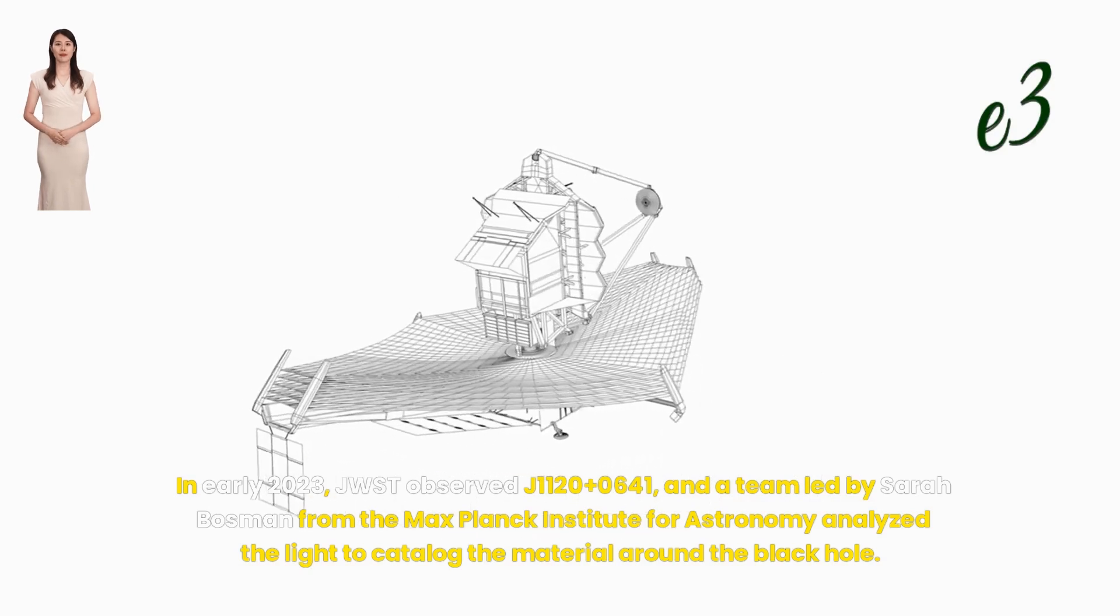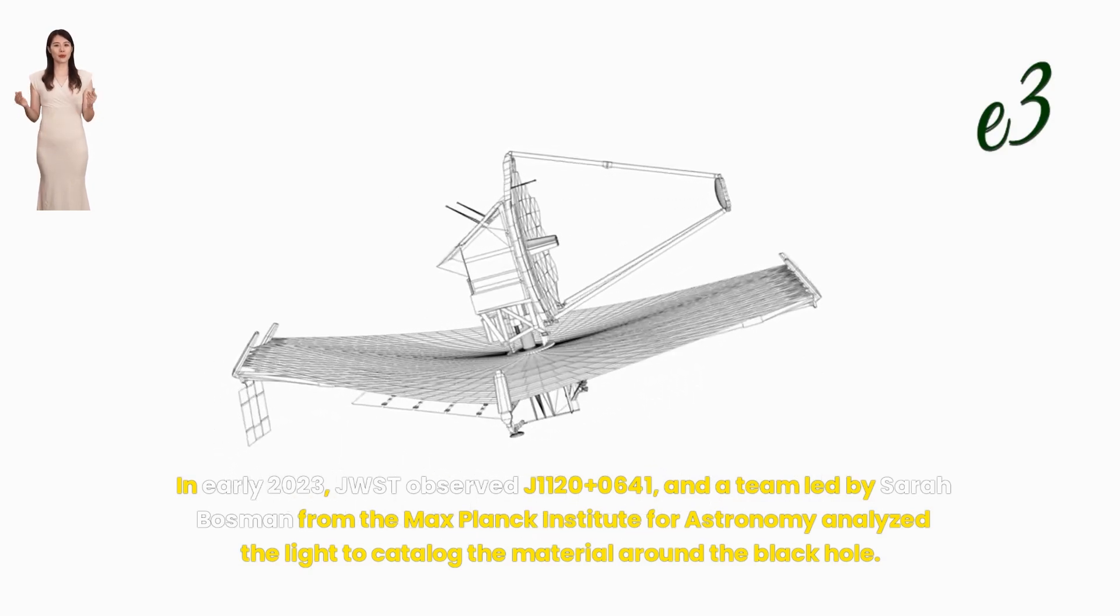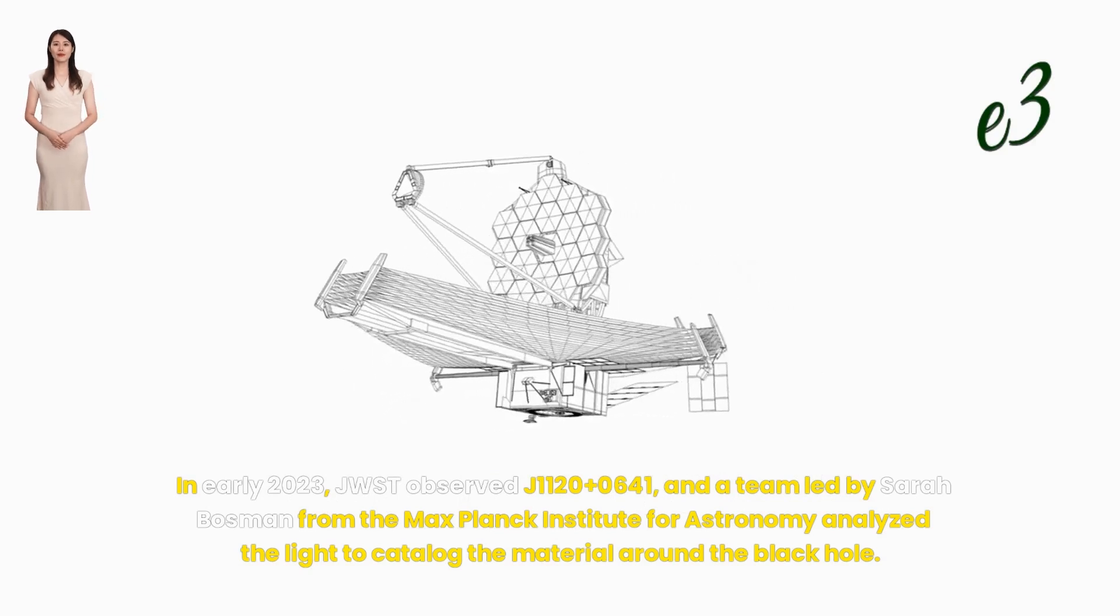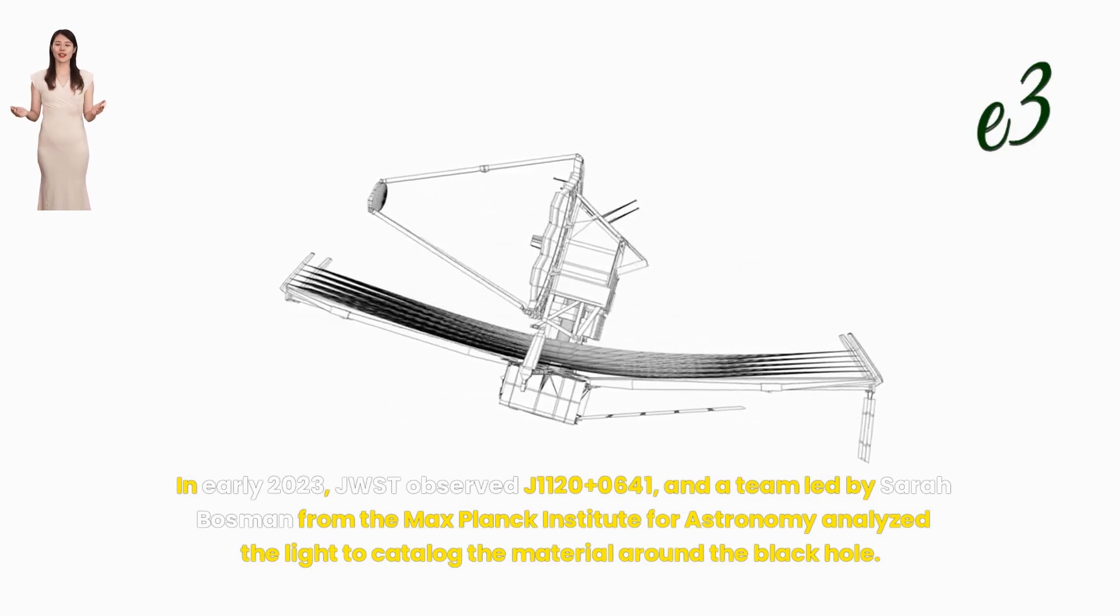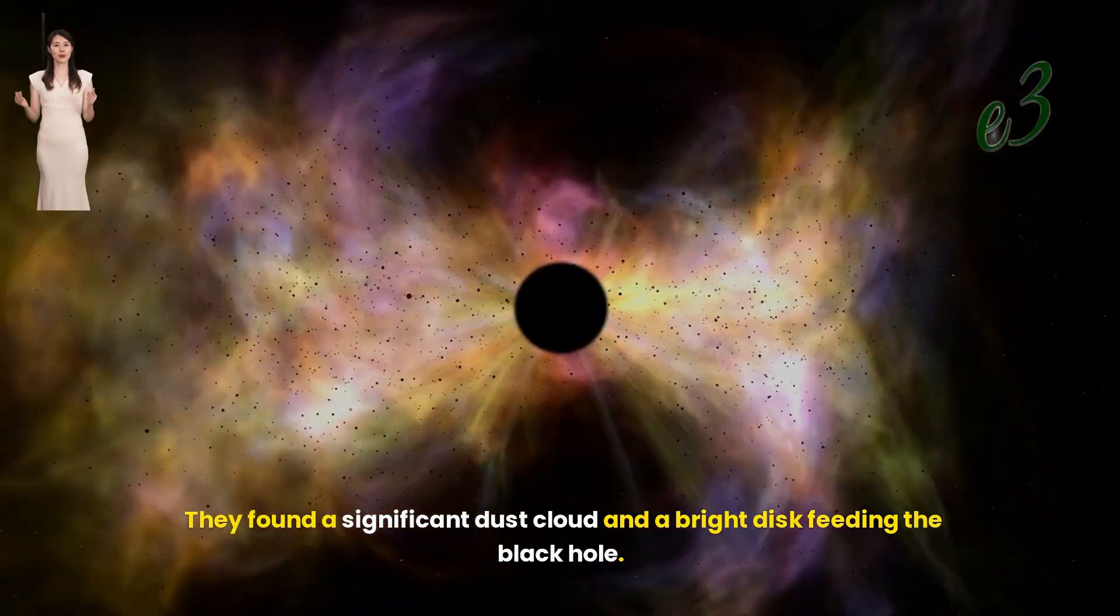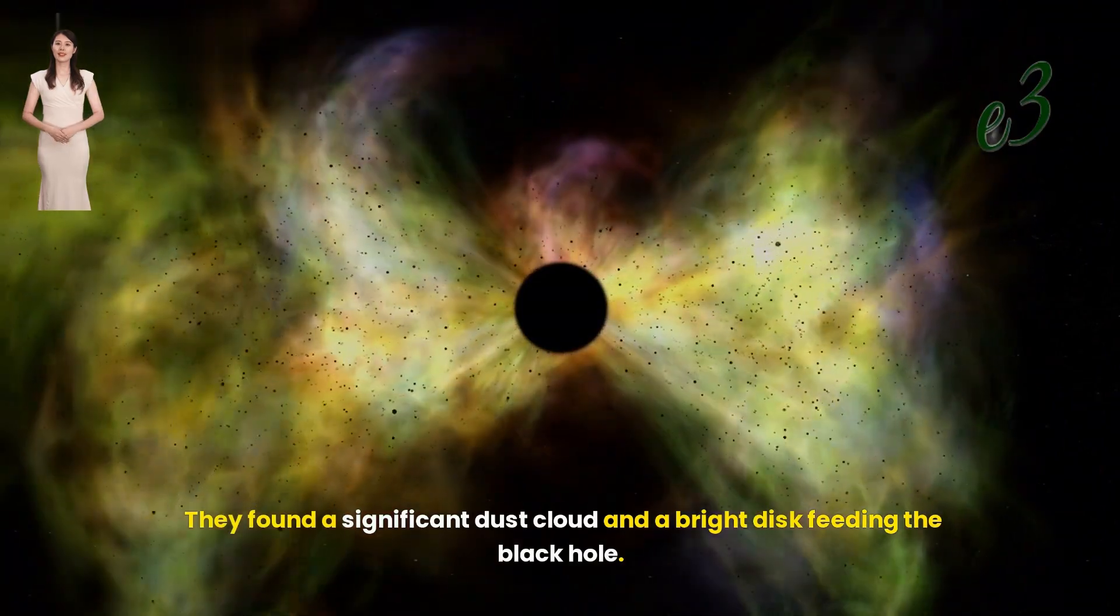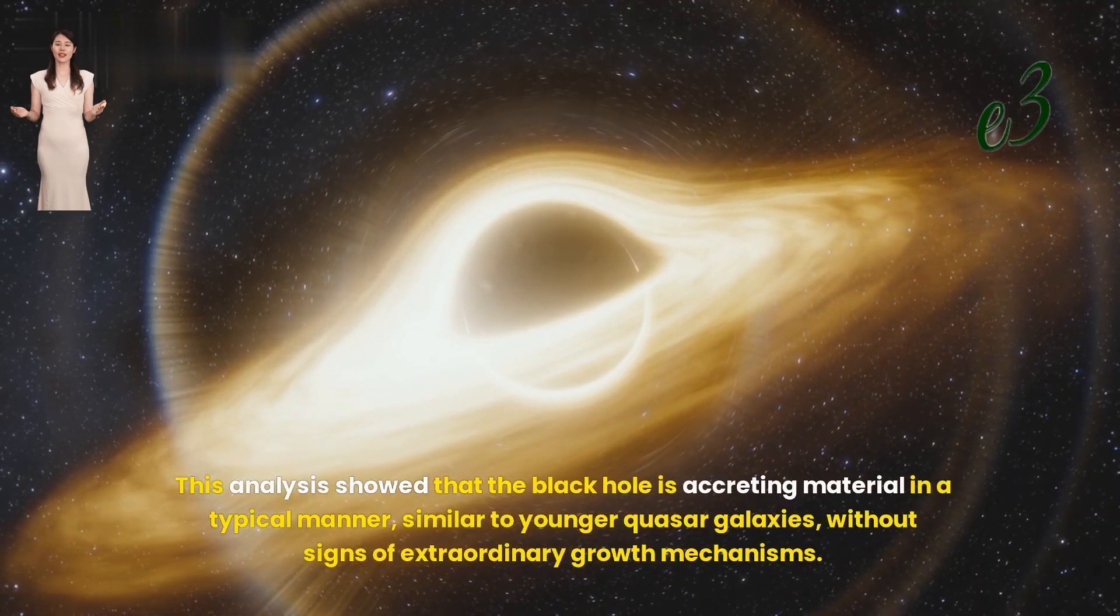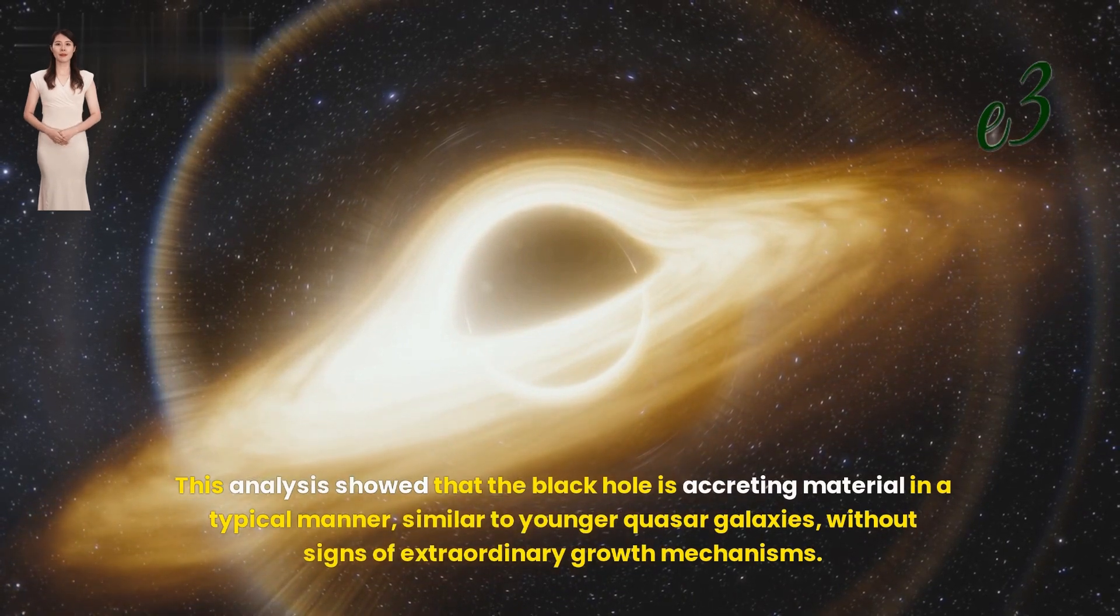Detailed observations by JWST. In early 2023, JWST observed J1120+0641 and a team led by Sarah Bosman from the Max Planck Institute for Astronomy analyzed the light to catalog the material around the black hole. They found a significant dust cloud and a bright disk feeding the black hole. This analysis showed that the black hole is accreting material in a typical manner, similar to younger quasar galaxies, without signs of extraordinary growth mechanisms.